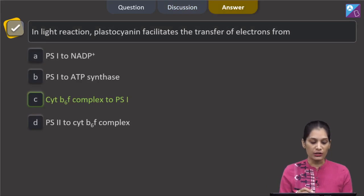So the correct option for the given question is option C which says the transfer of electrons from cytochrome B6F complex to PS1 is done by plastocyanin. Let's move to the next question.